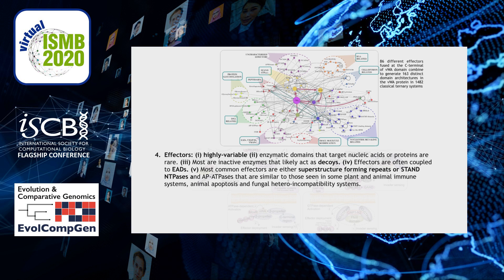We also observe that some effectors are not directly fused to the core proteins but are coupled to them via adaptive protein domains specific to these conflict systems, which we term effector-associated domains or EADs. The most common effectors in these systems are either superstructure-forming repeats such as TPRs or STAND-type NTPases, similar to those seen in some plant and animal immune systems, animal apoptosis, and fungal heterokaryon-incompatibility systems.